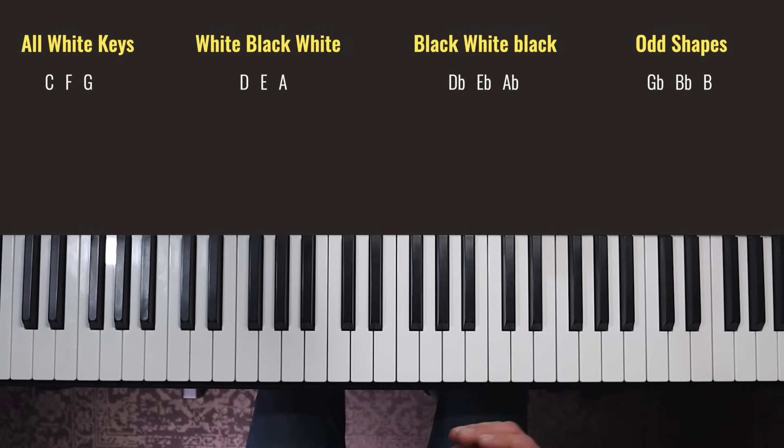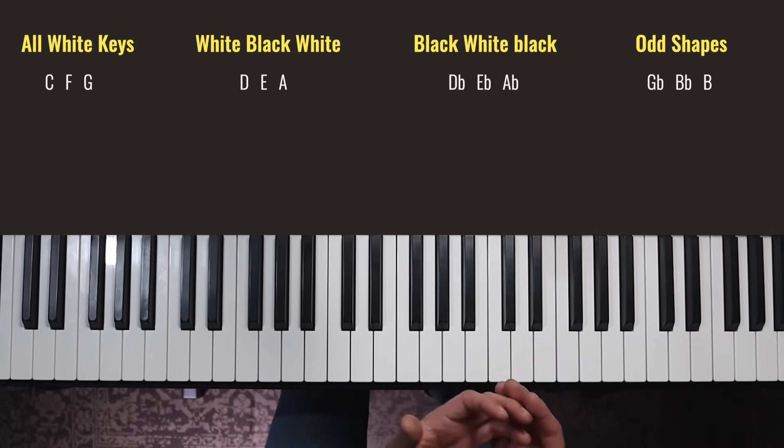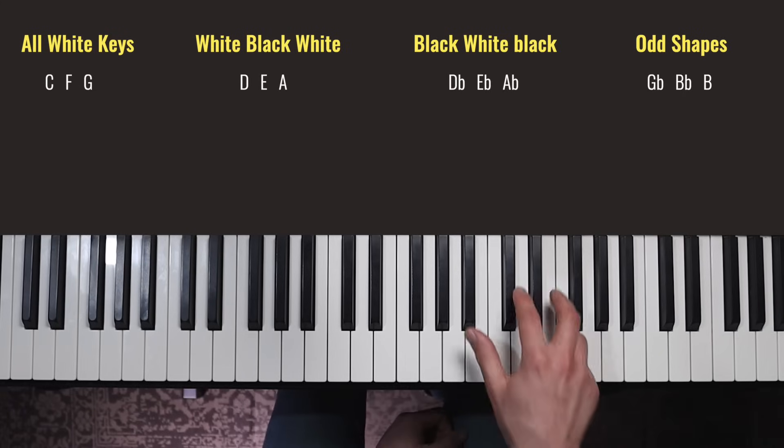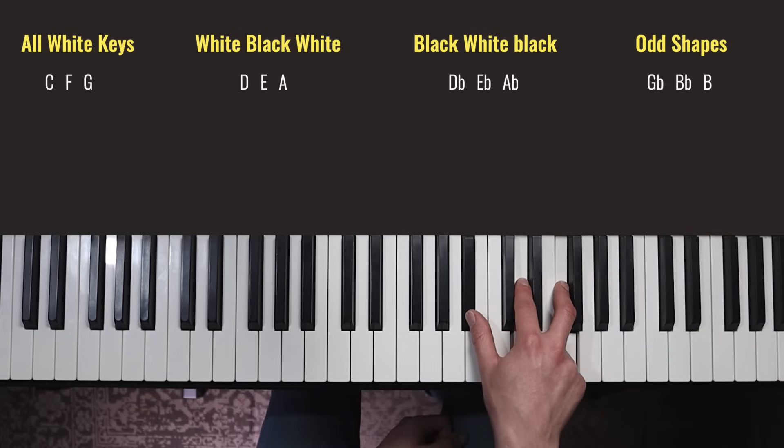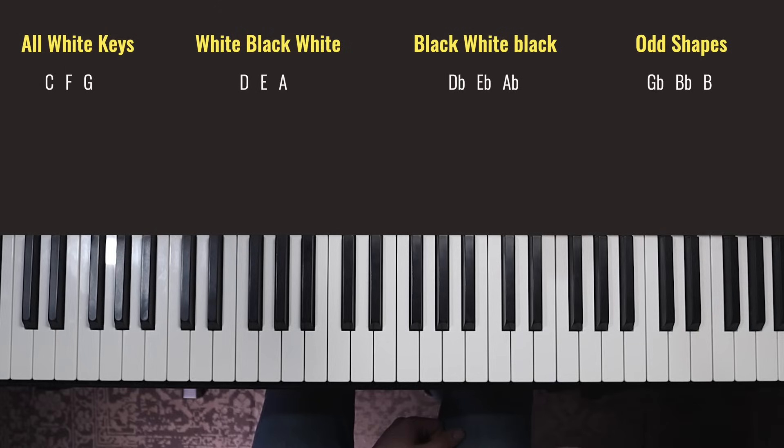And then the last two are B flat major and B major. Now these go opposite. So B major is white, black, black, and B flat major is black, white, white. And again, remember they look different, but the spacing between the notes is identical.